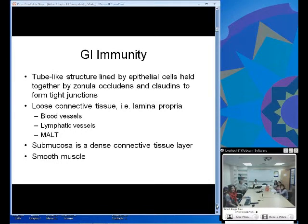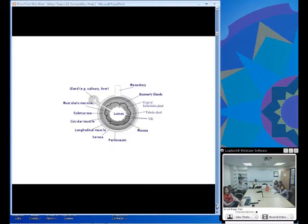The GI tract is a tube-like structure aligned by epithelial cells, which is the first line of defense, held together by zona occludens and zona adherens to form tight junctions. Next there is loose connective tissue called lamina propria which has blood vessels and lymphatic tissue - the MALT or mucosal associated lymphoid tissue. Specifically in the GI tract, it's referred to as GALT. Then the submucosa is a dense connective tissue layer followed by smooth muscle layer.